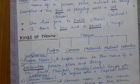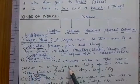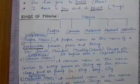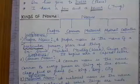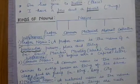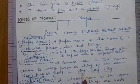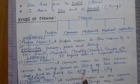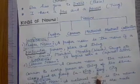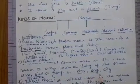Next is common noun. Common noun — isse aap Hindi mein kehte hain jati vachak sangya. Common noun ka matlab hota hai jab hum kisi particular class ya group ke baare mein baat karte hain. For example: king, boy, city. Maine yahan 'king' word use kiya hai lekin maine kisi king ka name nahi bola. Usi tarah se 'boy' ki baat ki hai lekin kisi bhi boy ka name mention nahi kiya.